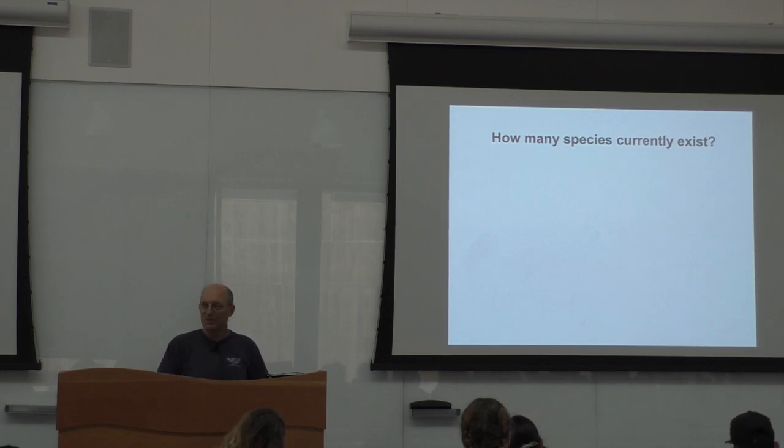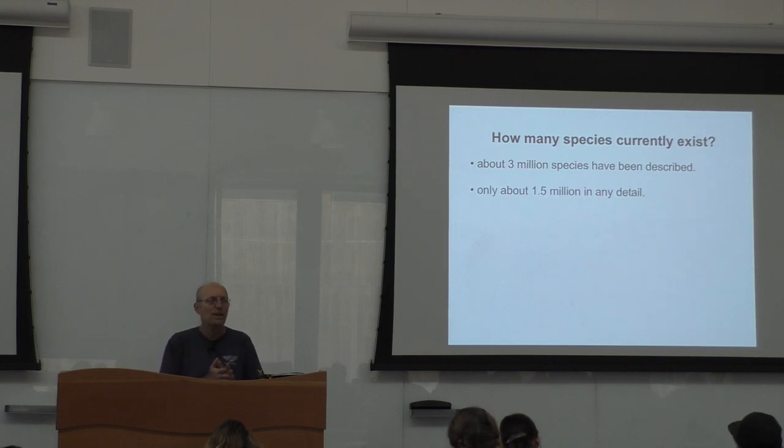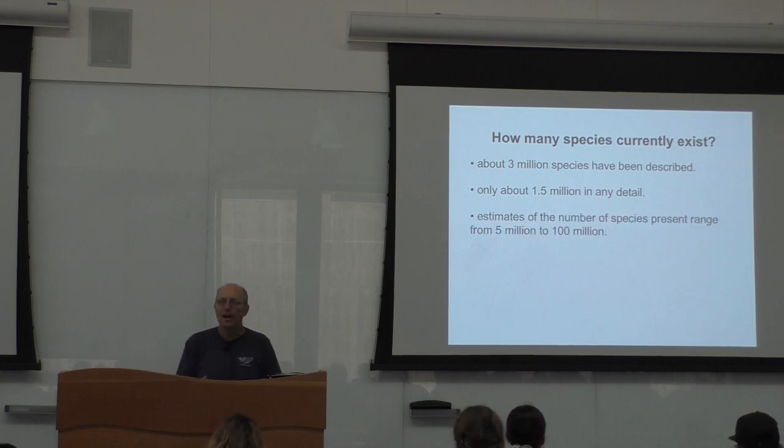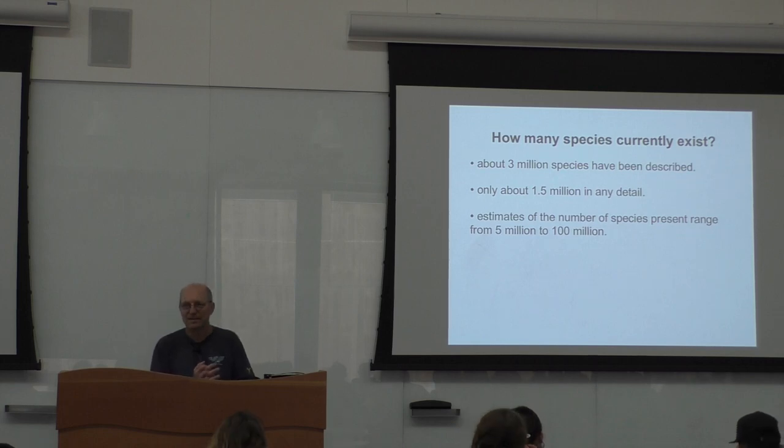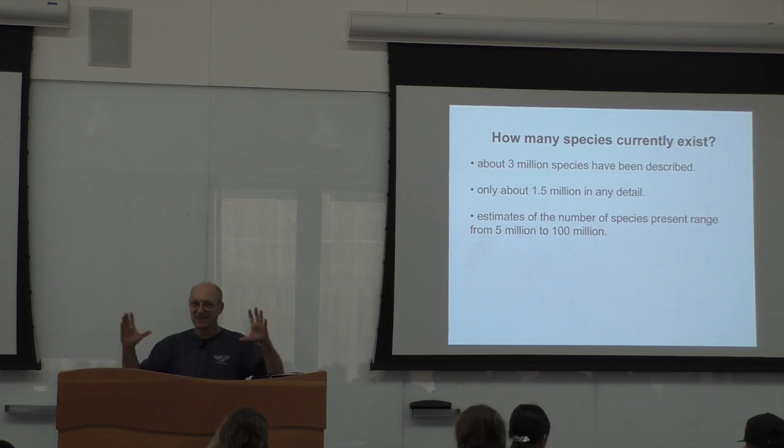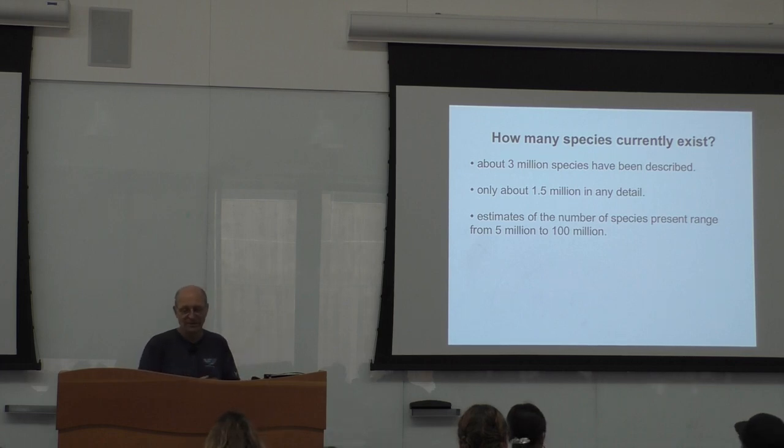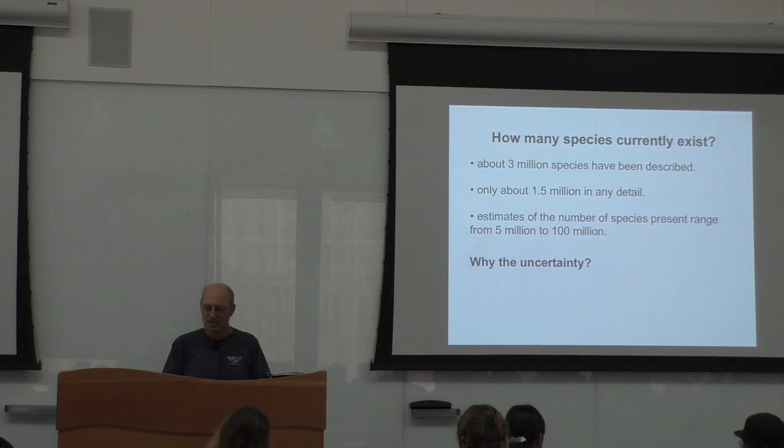If you agree that species exist, you may wonder how many species are currently in place. There are about three million species that have been described, and only one and a half in some sort of detail. And there are anywhere between five and a hundred million species on the planet. That is kind of a big range of unknown. And it might be a lot more than that. It could be a lot more than that.